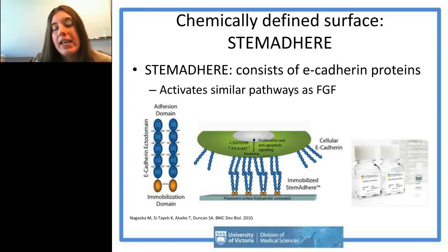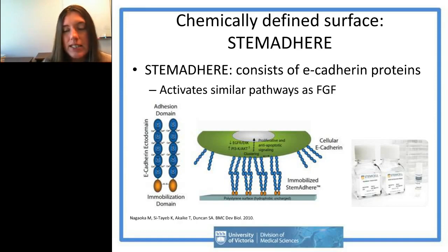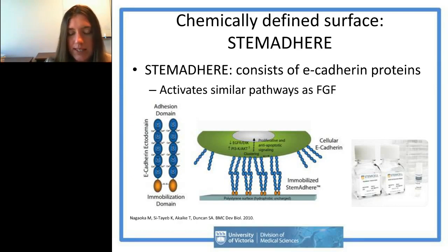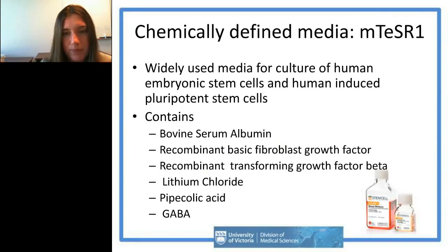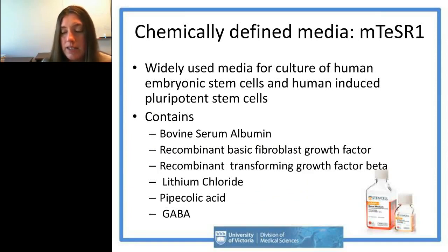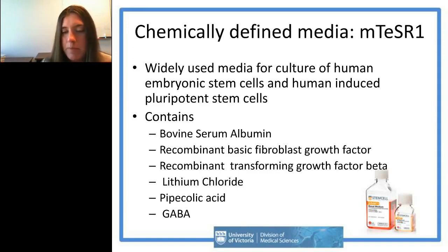The first surface we tested in our collaboration with STEMCELL Technologies was a product called StemAdhere, which is essentially E-cadherin protein that activates the FGF pathway to maintain pluripotency. The most commonly used media formulation for human pluripotent stem cell culture is mTeSR1, which does contain bovine serum albumin (BSA) along with basic FGF, TGF-beta, and other defined substances. While it is defined, the bovine protein component is not always desirable.